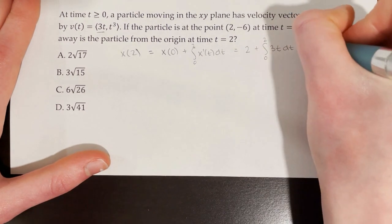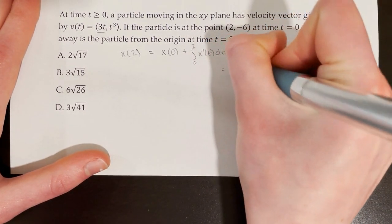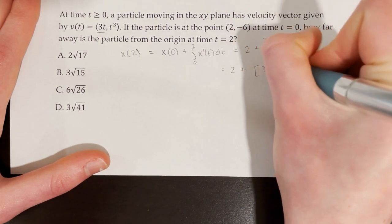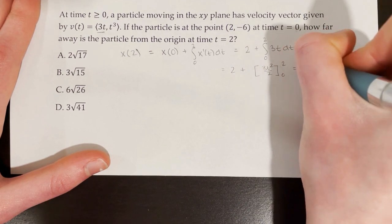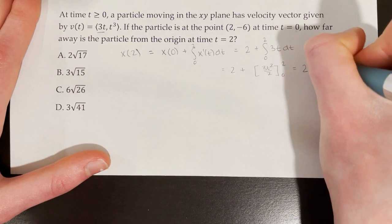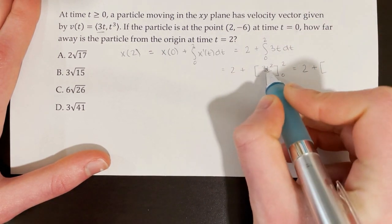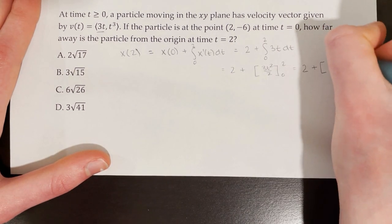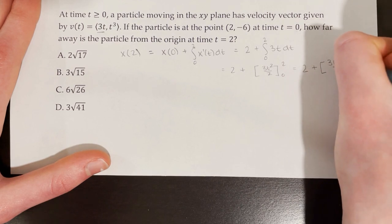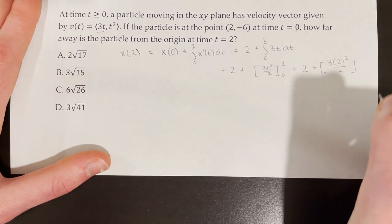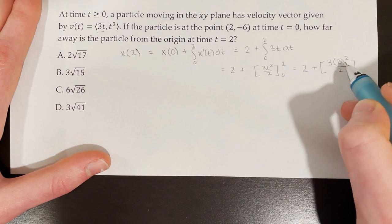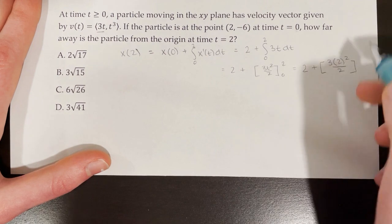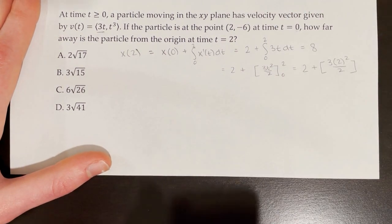Integrating 3t from 0 to 2: we take the antiderivative, which is 3t²/2, and evaluate at 0 and 2. Plugging in 0 gives nothing, so we plug in 2: 3 times 2² over 2 = 3 × 4 / 2 = 6. Therefore x of 2 equals 2 + 6 equals 8.